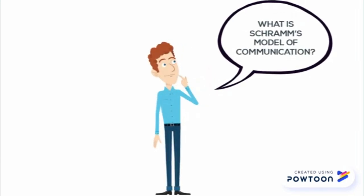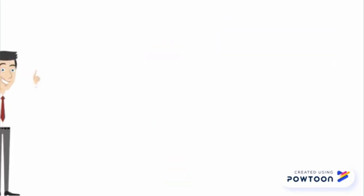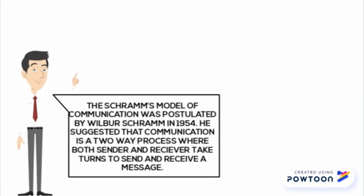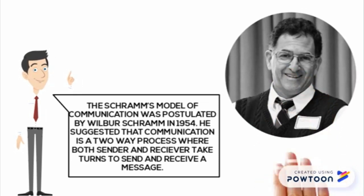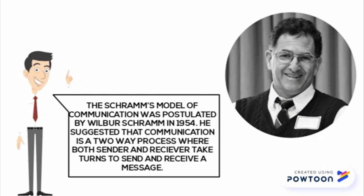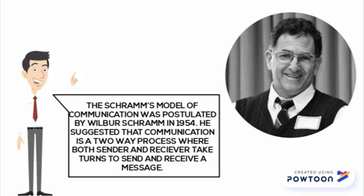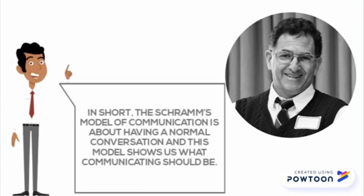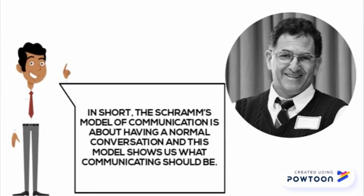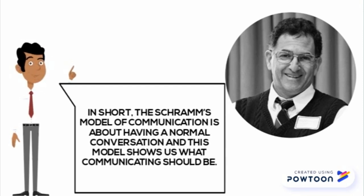What is Schramm's model of communication? The Schramm's model of communication was postulated by Wilbur Schramm in 1954. He suggested that communication is a two-way process where both sender and receiver take turns to send and receive a message. In short, Schramm's model of communication is about having a normal conversation, and this model shows us what communicating should be.